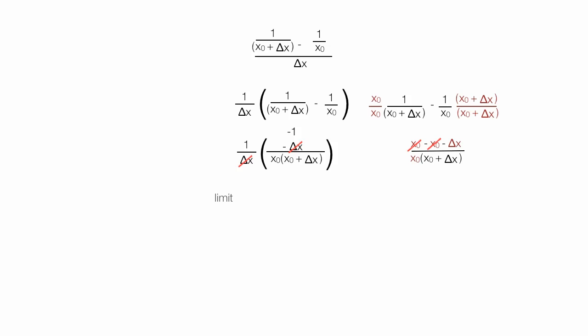So I can rewrite this as the limit of delta x goes to 0, I have negative 1 divided by x0 times x0 plus delta x. And this is all equal to negative 1 divided by x0 times x0, which is x0 squared.